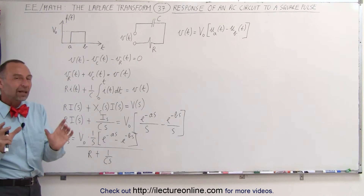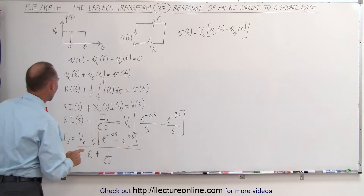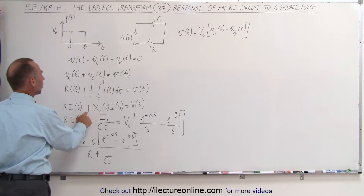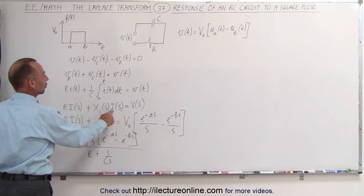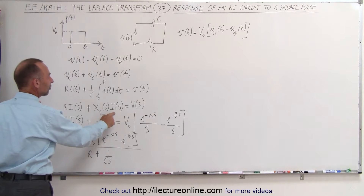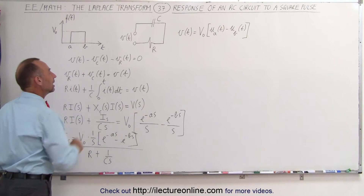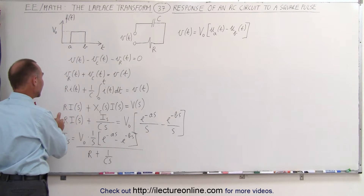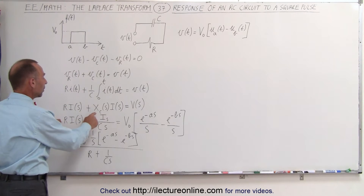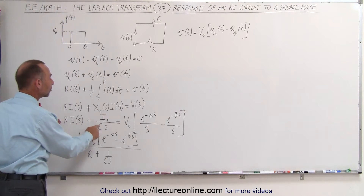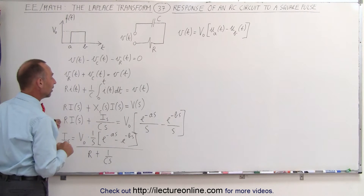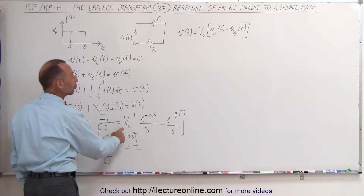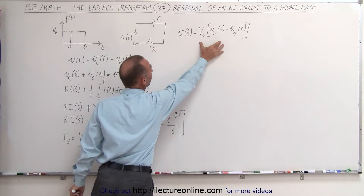Now we take the Laplace transform of both sides. R times the current in the S domain plus the reactance times the current in the S domain equals the voltage in the S domain. R remains R in the S domain, but the reactance in the S domain becomes 1 over C times S, and the voltage in the S domain is the Laplace transform of the input.